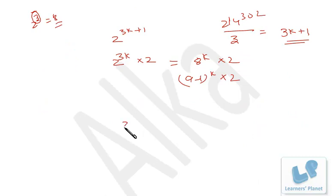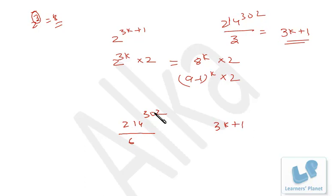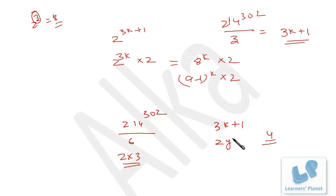So what is the remainder of 214 raised to 302 when divided by 6? We already know 214 is in 3k+1 format, and it is also an even number since 6 equals 2 times 3. So this number is simultaneously in 3k+1 format and a multiple of 2. The number satisfying both is 4 (putting k=1 gives 4, which is a multiple of 2 and one more than a multiple of 3). So 214^302 divided by 6 gives remainder 4.